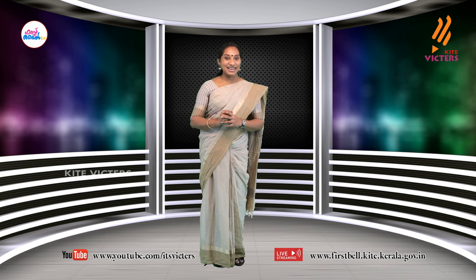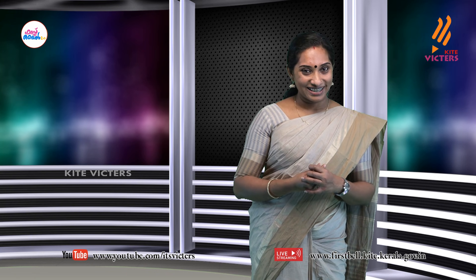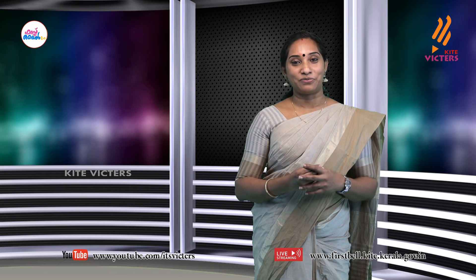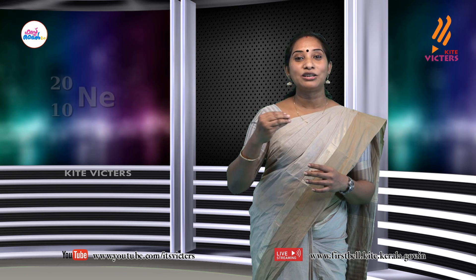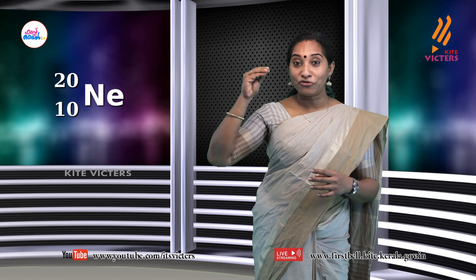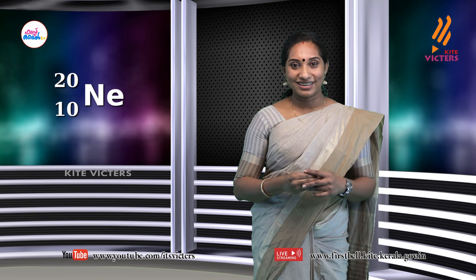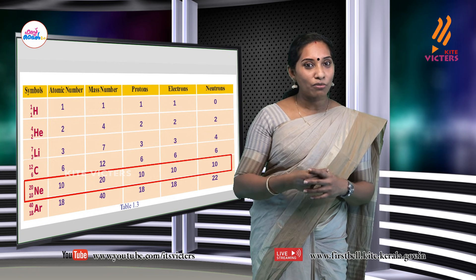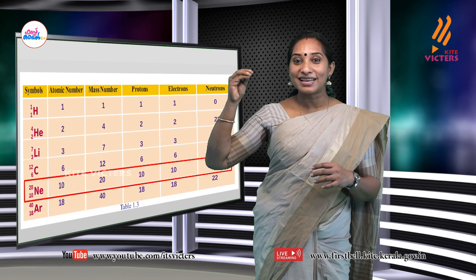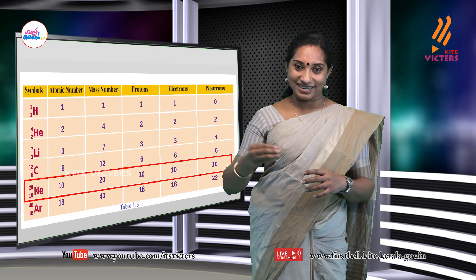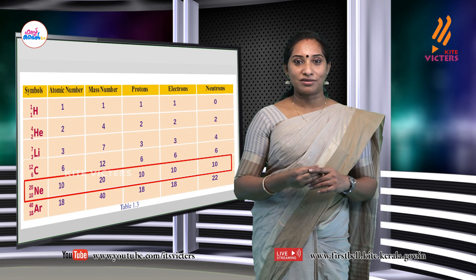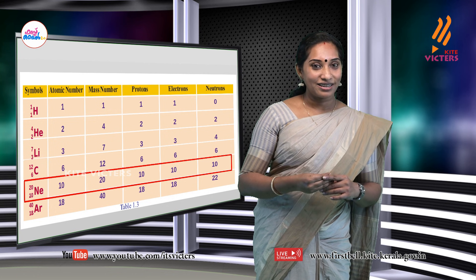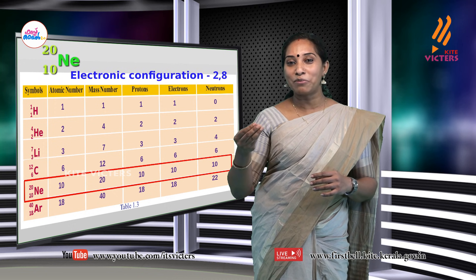Let's work out some examples. Take neon atom — its atomic number is 10 and mass number is 20. From that you have to find the number of protons, electrons, and neutrons. The number of protons is 10. The number of electrons is the same as protons, that is 10. The number of neutrons is mass number minus atomic number: 20 minus 10 equals 10. The electronic configuration of neon is 2, 8. Take the compass and draw a small circle to represent the nucleus, and inside write 10p and 10n. Then draw another circle to represent K shell, which contains 2 electrons — represent them as small beads.